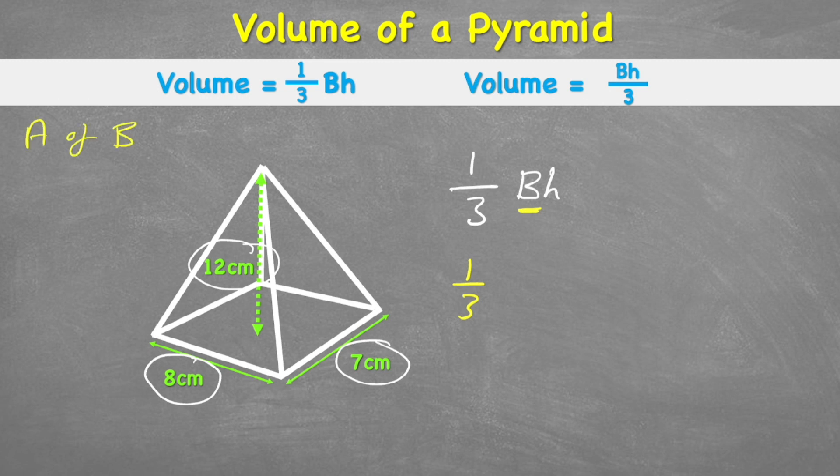Area of base. The formula for that would be length times width. So therefore we have eight times seven, and eight times seven is 56. So the area of our base is 56 centimeters squared.